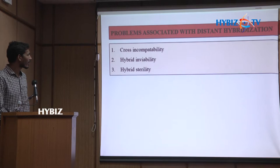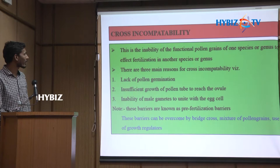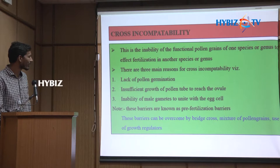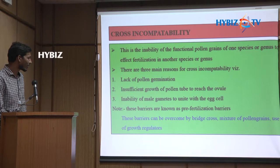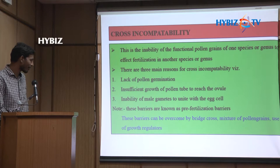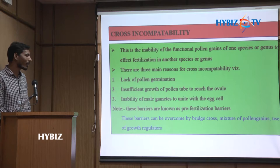There are lots of barriers with distant hybridization, such as cross incompatibility, hybrid inviability, and hybrid sterility. Cross incompatibility is the inability of functional pollen grains of one species or genus to effect fertilization of another species or genus. The three main reasons are: lack of pollen germination, insufficient growth of pollen tube to reach the ovule, and inability of male gametes to unite with the egg. These are known as pre-fertilization barriers, which can be overcome by bridge cross, mixture of pollen grains, or use of growth regulators.